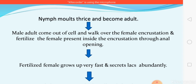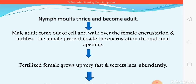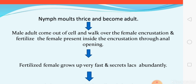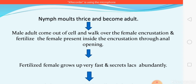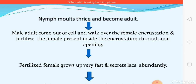After fertilization, the female grows very fast and secretes resin abundantly. The size of the female cell becomes several times larger than the male cell. That is why the female is called the chief producer of lac — although males may also contribute, the female is the chief producer because after fertilization her resinous secretion increases much more than the male's.